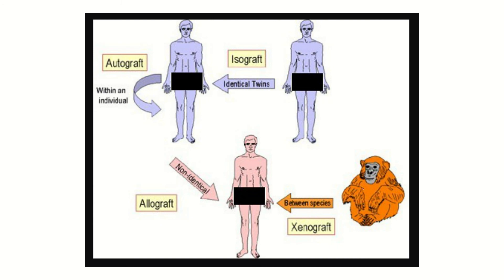In the second slide, you can see two people who are genetically identical — they are twins. When a graft is received from one twin and transplanted into the other, this is called an isograft. Because they are twins and genetically identical, any tissue from one person transplanted into the other is an isograft.